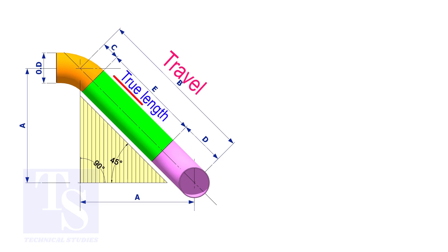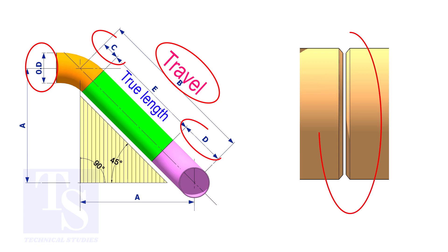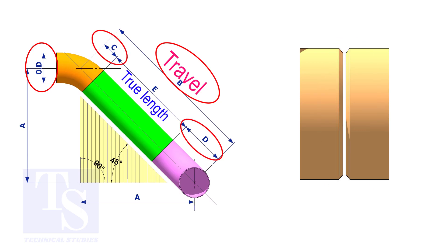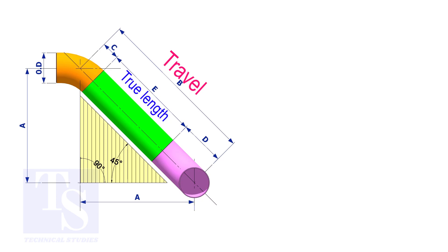To calculate the true length or the cut length, we need to know the travel length, the diameter of the pipe, the joint gap, and the elbow center. The elbow center is sometimes called the takeoff length. Assume that the elbows are short radius.